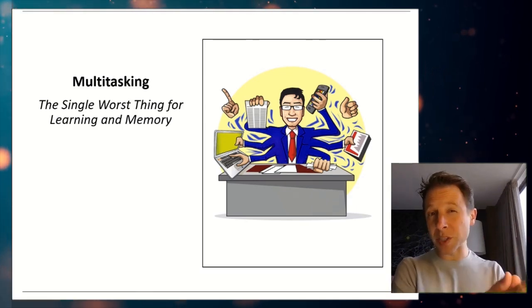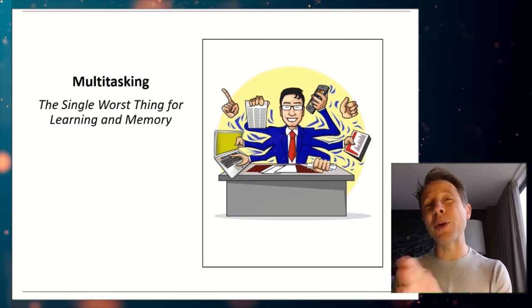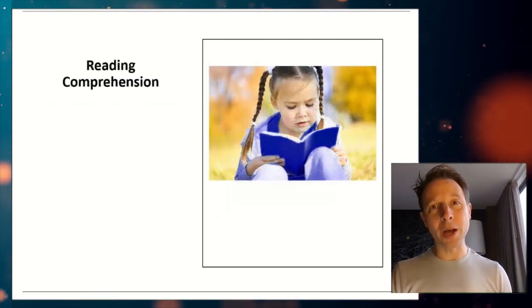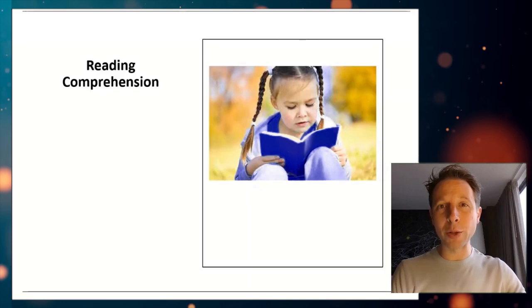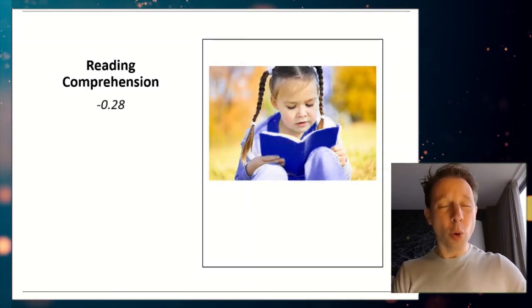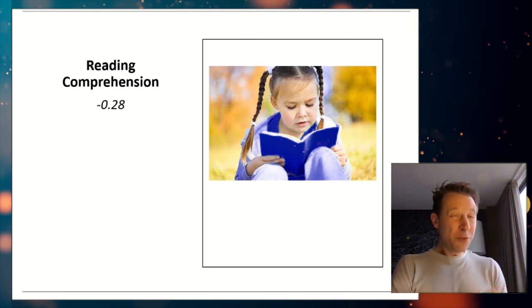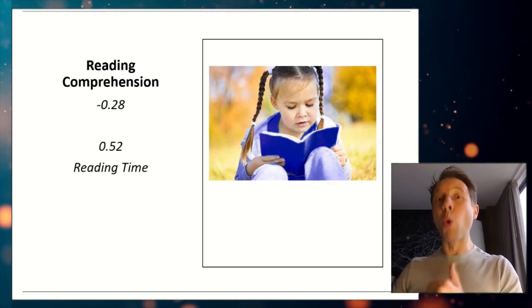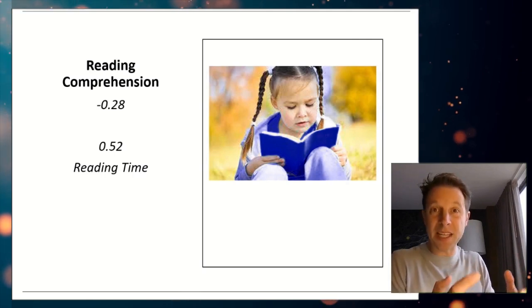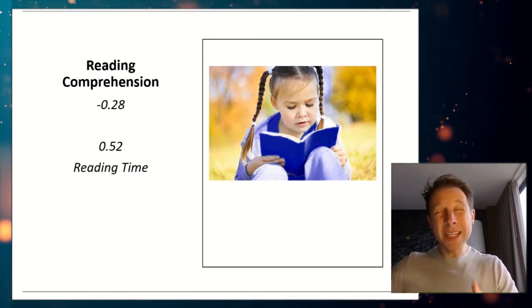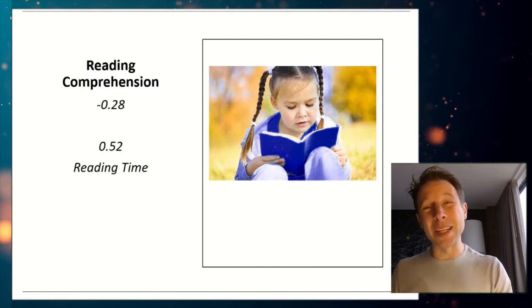When you multitask, you go slower, your accuracy drops, your memory tanks significantly. And this is true when it comes to reading comprehension. If you multitask while you read, on average, your comprehension will drop over a quarter standard deviation. And if you multitask while you read, you need about half a standard deviation more time to simply get the same content, the same material as everyone else. So you can overcome multitasking while reading, you just need a ton more time to get there.